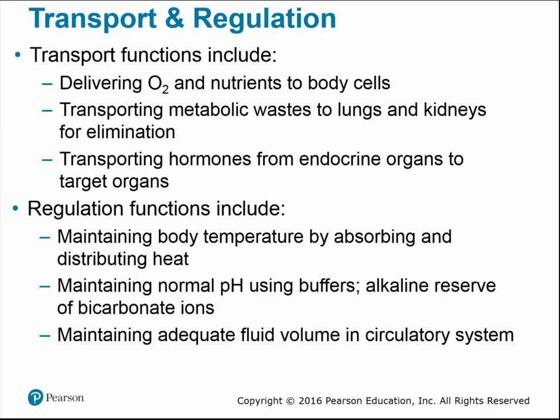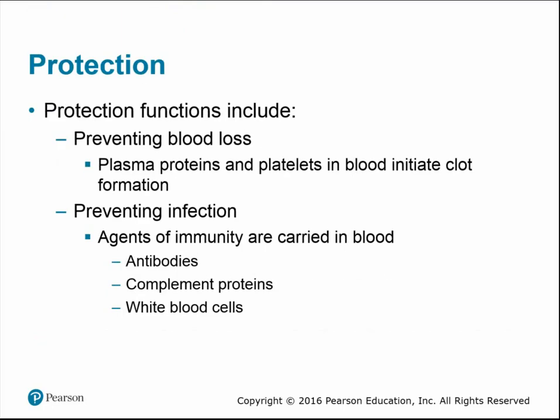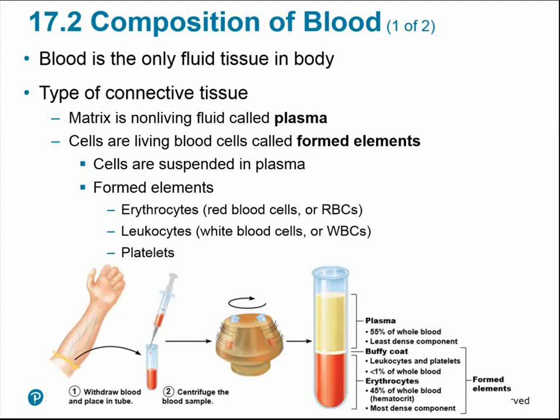Blood also transports hormones from endocrine organs to their target organs. Regulation functions include maintaining body temperature by absorbing and distributing heat, maintaining normal pH using buffers, and maintaining adequate fluid volume in the circulatory system. Protective functions include preventing blood loss — plasma proteins and platelets help initiate clot formation — and preventing infection, as immune system cells including white blood cells, antibodies, and complement proteins are found in the blood.